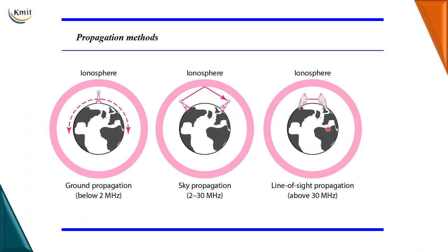In line-of-sight propagation, very high frequency signals are transmitted in a straight line between two antennas. That is why we call it line-of-sight propagation — because the two antennas are in one line.